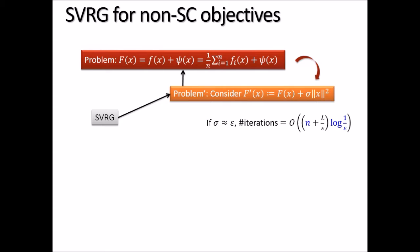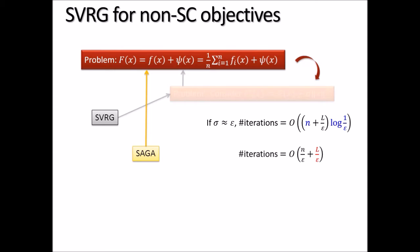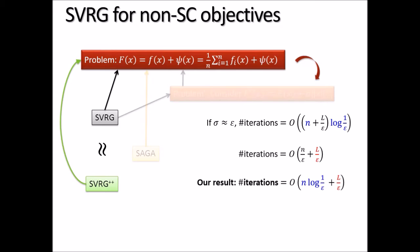For this reason, people started deriving direct methods like SAGA to directly solve the non-strongly convex objective. What we showed in the paper is that not only does SVRG directly work, but something even more interesting can happen. We make two modifications to SVRG — calling it SVRG++ — and provide a slightly different method with an even faster running time.